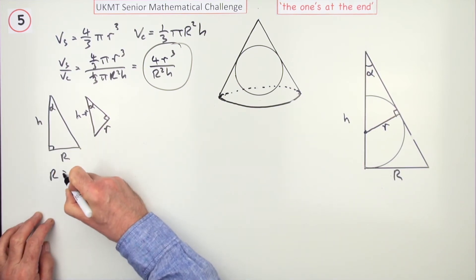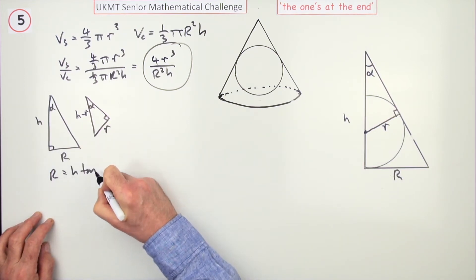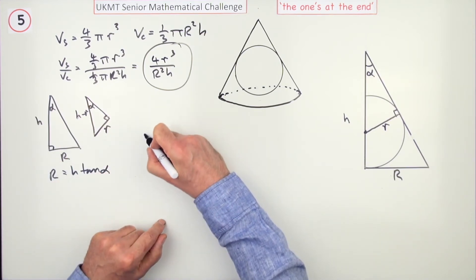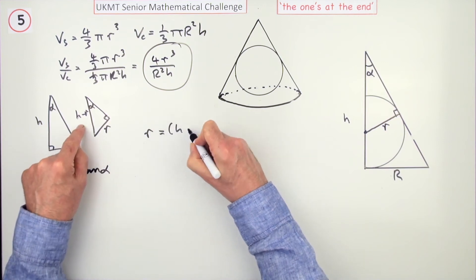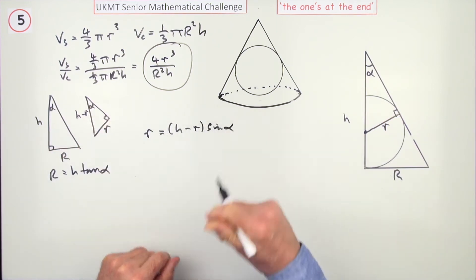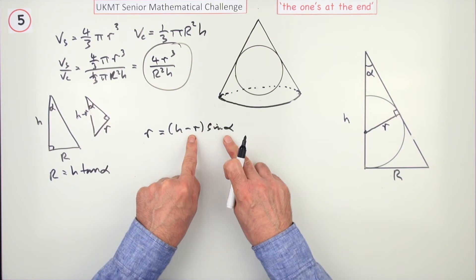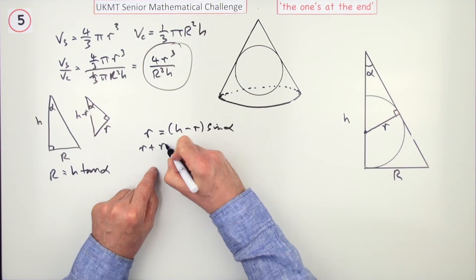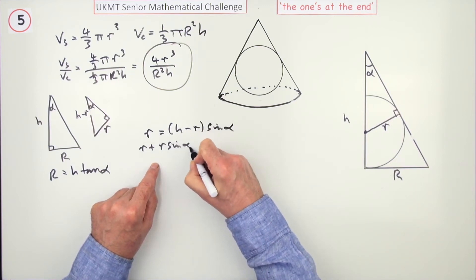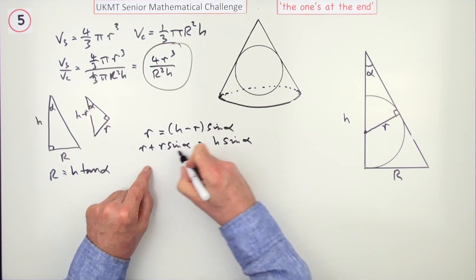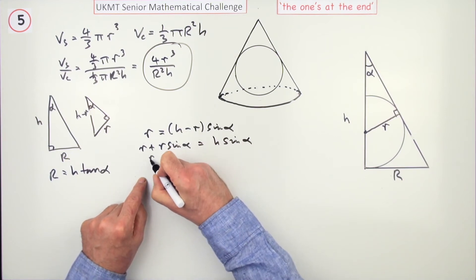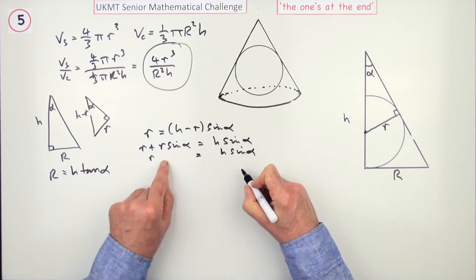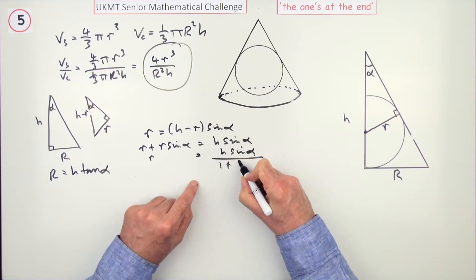From this triangle, R equals H tan α, so R can get replaced with an H. And in this one, r equals (H minus R)sin α. Now I could rearrange that, expand the bracket and take that to the front. R plus R sin α is H sin α. Common factor of R, that would come out leaving 1 plus sin α. So H sin α over 1 plus sin α.